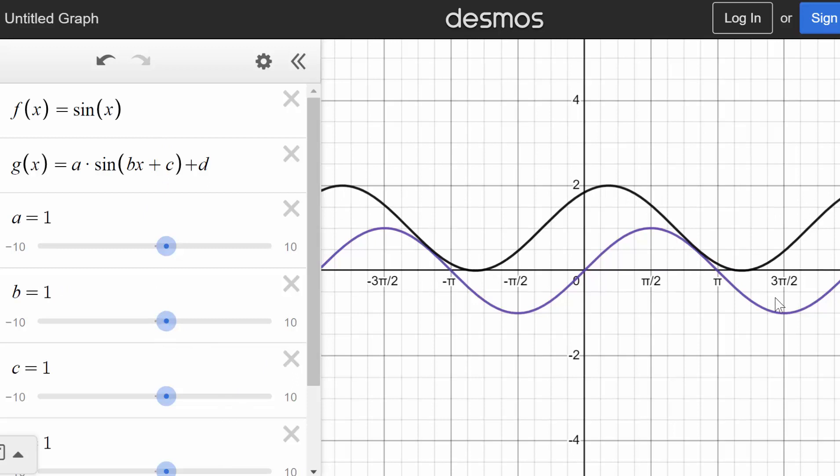And then c deals with horizontal stretching or shifting. We can see c just moves it left to right. For the parent function, c is 0.